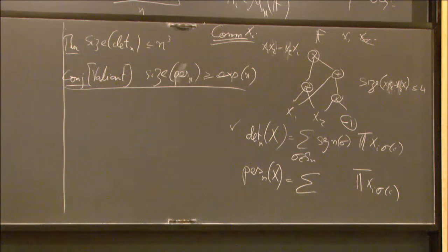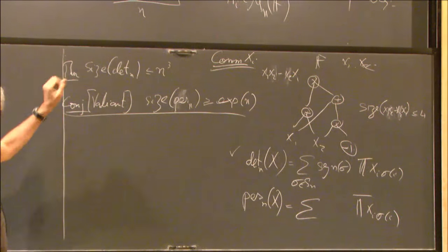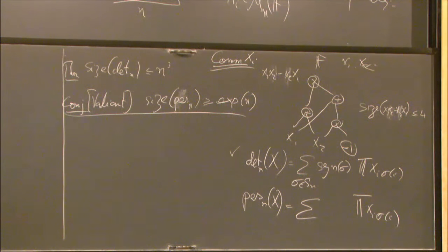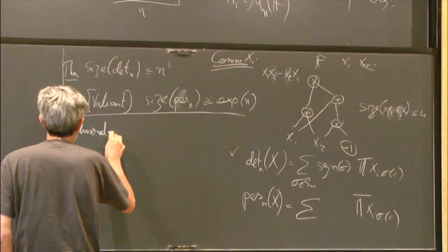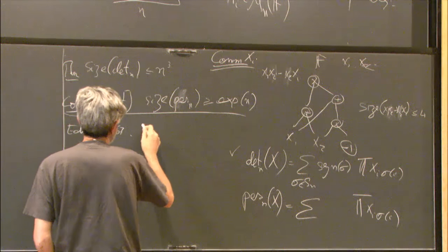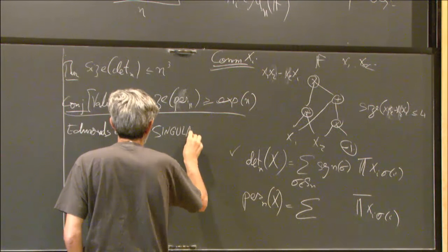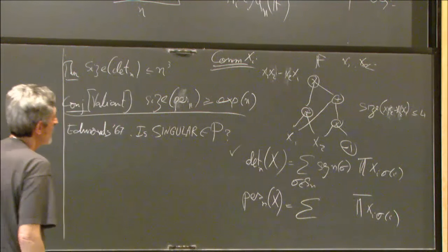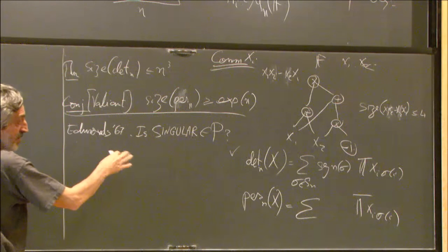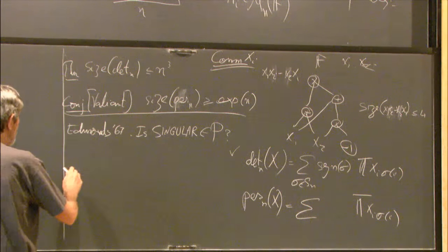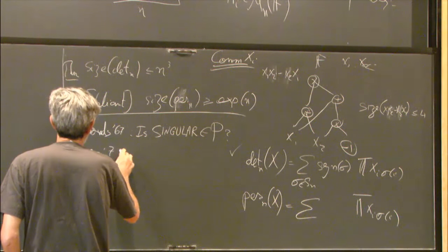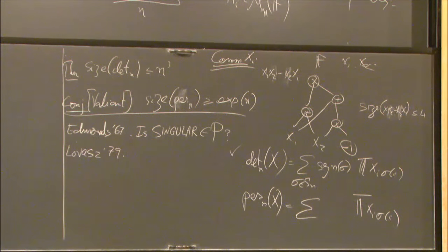It's not clear what the connection is to the singular problem I defined. Let me tell you about the history. In the commutative case, Edmonds — coming from optimization in the 1960s — asked whether singular is in P, whether it has a polynomial time algorithm. This question has to do with just checking whether the permanent of a matrix is non-zero.